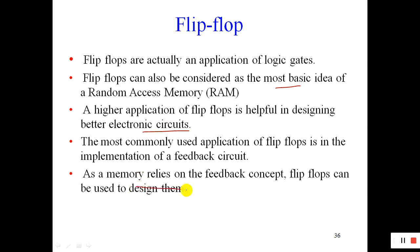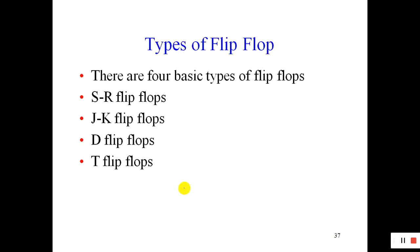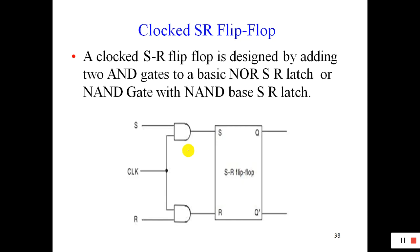Now, types of flip-flop — there are four basic types. The first one is SR or RS flip-flop. We will discuss one by one: what is SR flip-flop, what is JK flip-flop, what is D flip-flop. First of all, SR flip-flop — that is Set and Reset flip-flop.